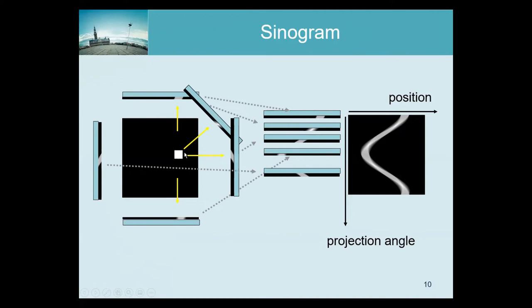And you can easily show mathematically that the profile of the activity in the image is a sine, and that's why we call it sinogram. So this is the position on the detector, or the distance of the projection line from the center, and the other coordinate is the angle.